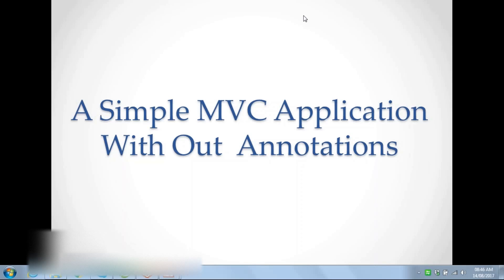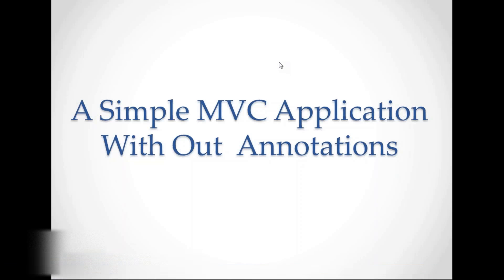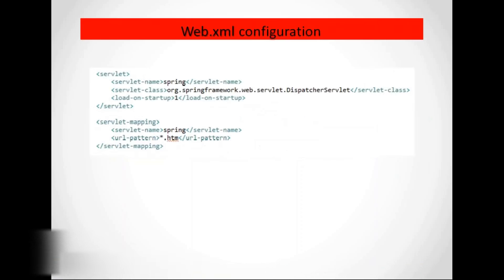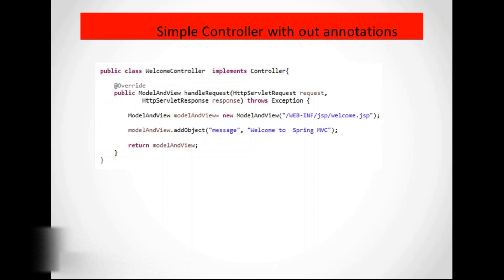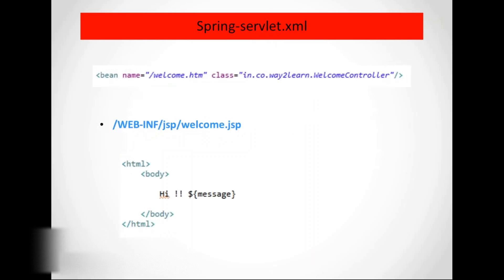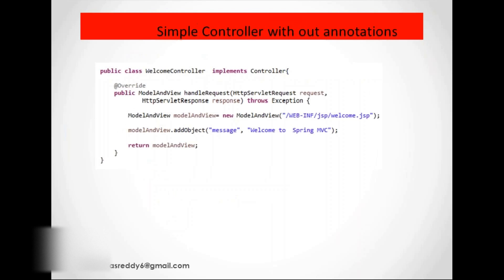In the last session we were discussing a simple MVC application without annotations. We started and developed a small MVC application, then discussed the importance of the dispatcher servlet configuration and how to write controllers, the usage of controllers, and how to configure a controller with associated handler mapping in the Spring configuration file. We also discussed how the dispatcher servlet renders the response back to the JSP.